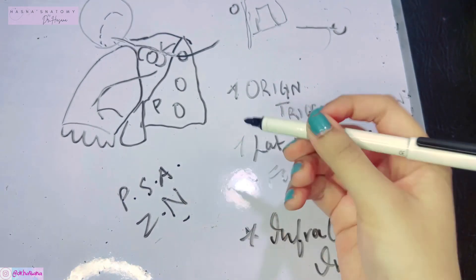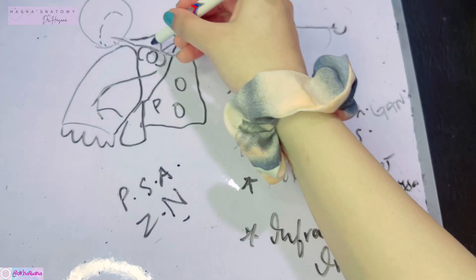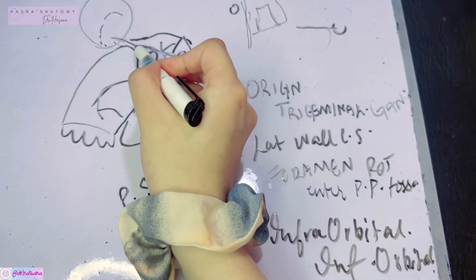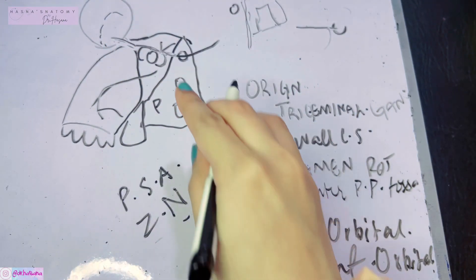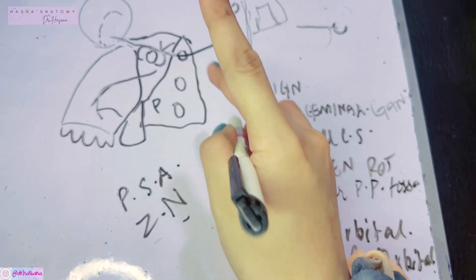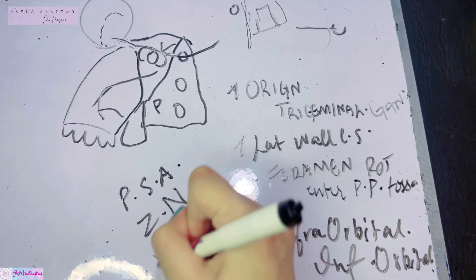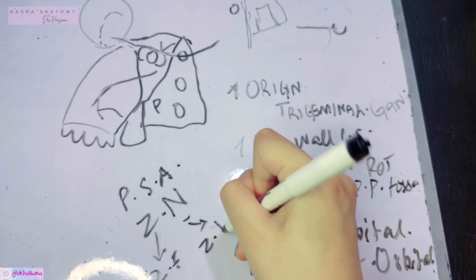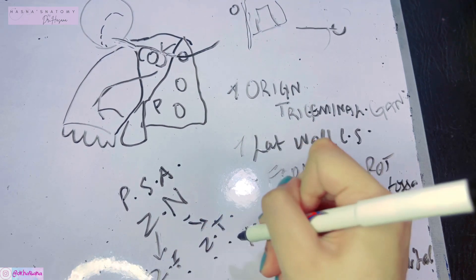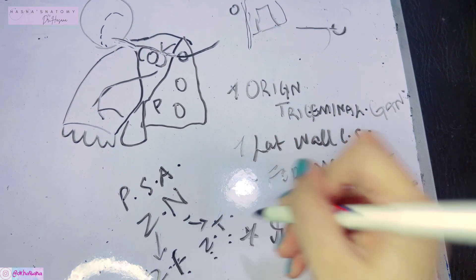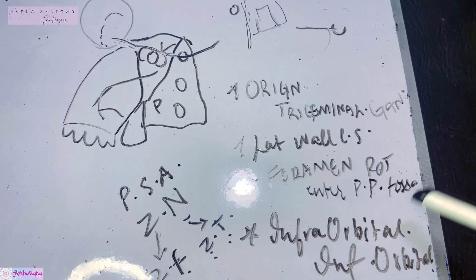The next branch is the zygomatic nerve. What the zygomatic nerve does is accompany the infra-orbital nerve through the inferior orbital fissure. When it emerges outside the orbit, it divides into its terminal branches — the zygomaticofacial and zygomaticotemporal nerves. These two supply the skin of the face and the skin of the temple.